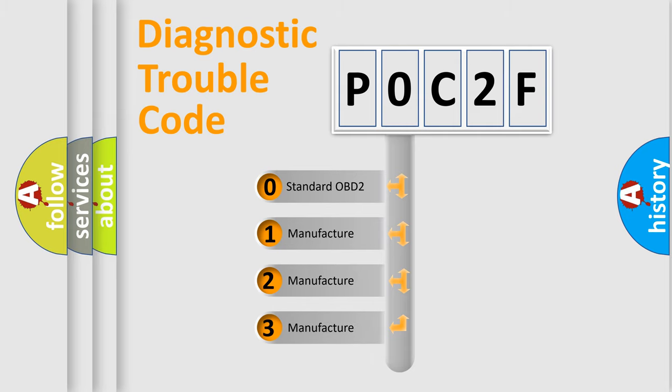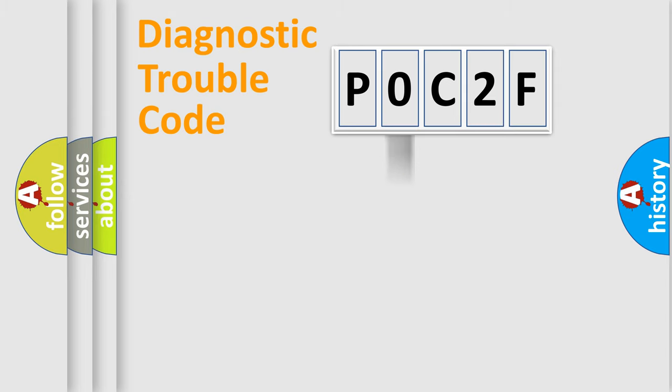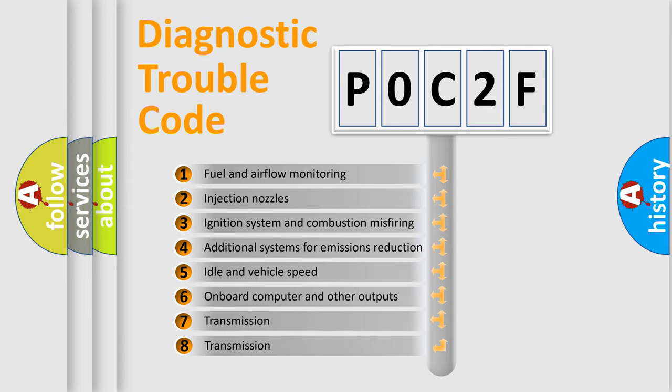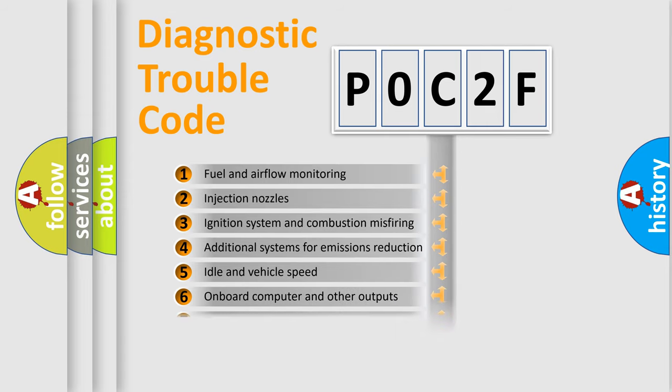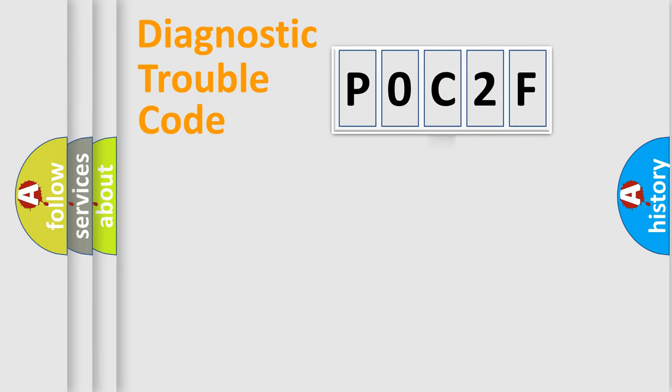If the second character is expressed as zero, it is a standardized error. In the case of numbers 1, 2, or 3, it is a more precise expression of the car-specific error. The third character specifies a subset of errors. The distribution shown is valid only for the standardized DTC code.